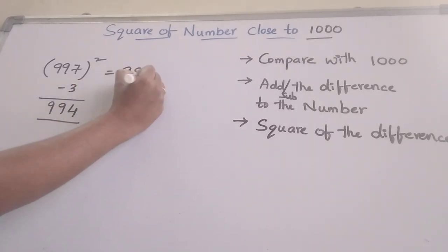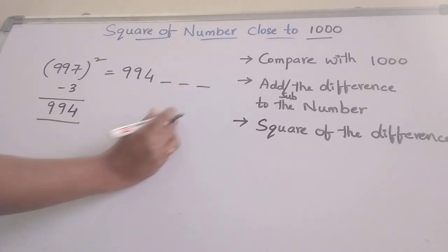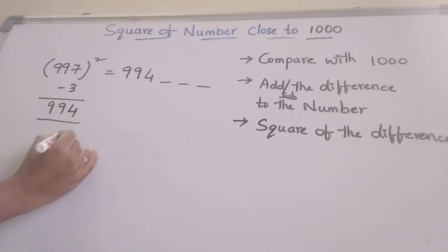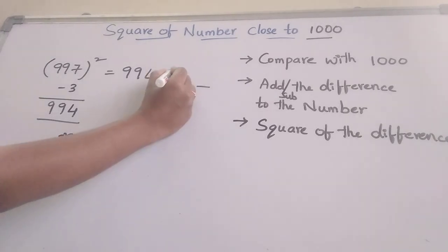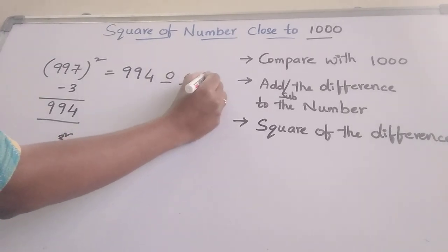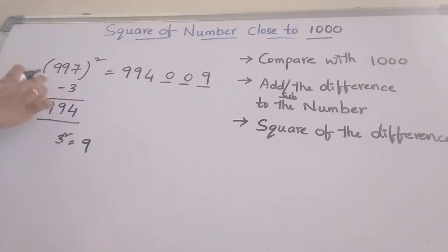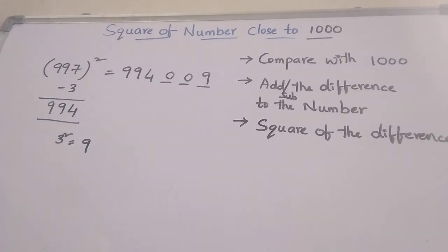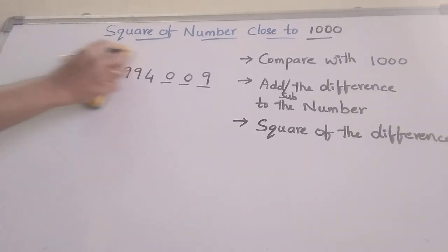Write 994 here and take 3 blanks. What is the square of 3? That is 9, so write 009 here. This is the answer — for 997, this number is the answer. Let's move to one more example.